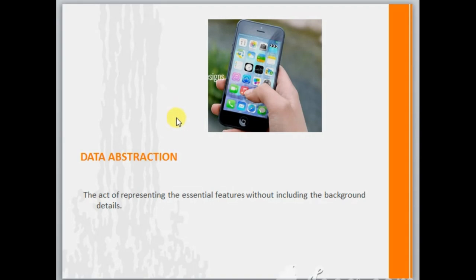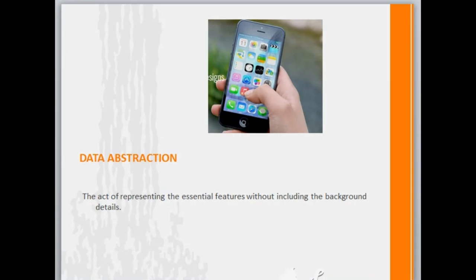Next we'll talk about data abstraction. Data abstraction means the act of representing the essential features without including the background details. We will be concerned only with the interface and have nothing to do with the internal functions. For example, if I have a mobile phone and I want to click a picture, I know there is a camera app — I click on the camera icon and click the image. What mechanism is happening inside the phone I have nothing to do with. This is called data abstraction.